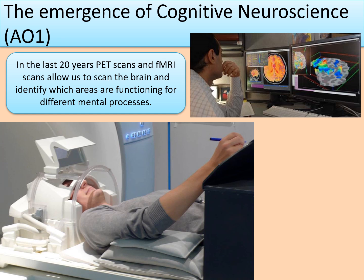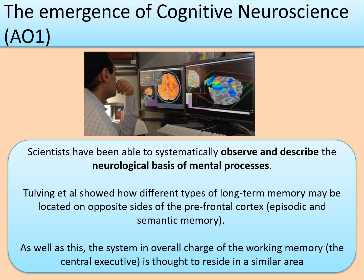We can actually see which structures in the brain are responsible for particular internal mental processes. Tulving showed how different types of long-term memory may be located on opposite sides of the prefrontal cortex — your episodic and semantic memories. Additionally, the system in overall charge of working memory, the central executive, is thought to reside in a similar area. This has been established through cognitive neuroscience and scanning techniques.